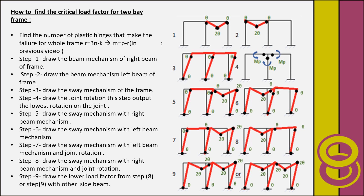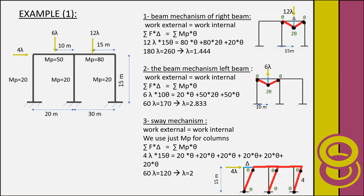We will take the first example. We have a two-bay frame with vertical loads and a horizontal load. The plastic moment for the columns equals 20, the plastic moment for the right beam equals 80, and for the left beam equals 50. Going to the first step — beam mechanism of the right beam — we take the external work equal to the internal work.